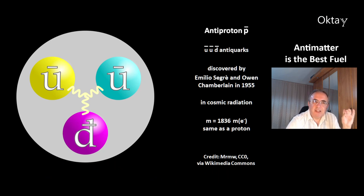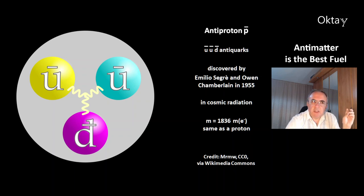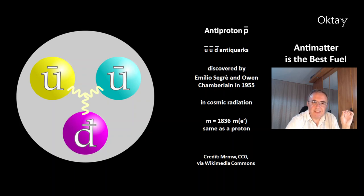This is the particle antiproton. It consists of two up antiquarks with a charge of plus or minus two thirds, and a down antiquark with a charge of plus one third. The antiproton was discovered by Emilio Segrè and Owen Chamberlain in 1955. It is part of cosmic radiation. Measurements of the mass of the antiproton show it has a mass of 1,836 electron masses — exactly the same mass as a proton.